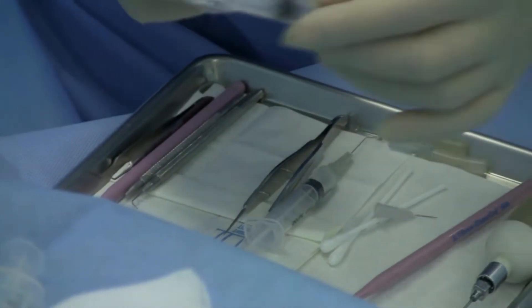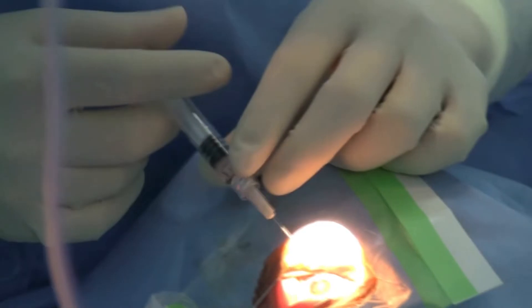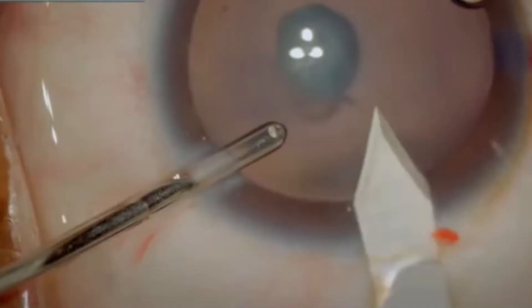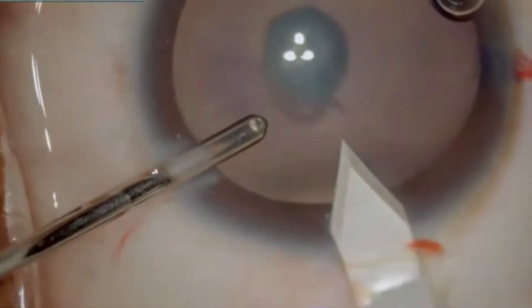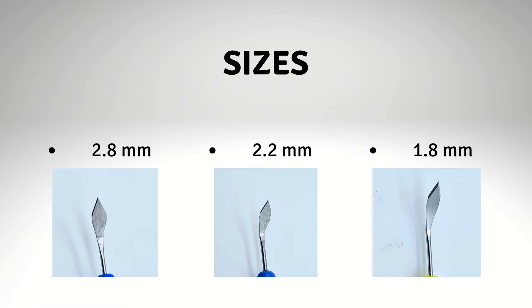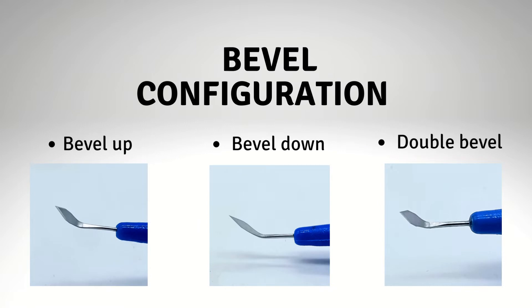The size of the incision, which is about 2.8 millimeters wide, is standard, with options up to 2 millimeters and smaller — this usually depends on the size of the phaco probe. Different types of keratomes with varying sizes are available.